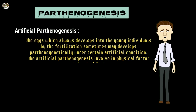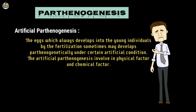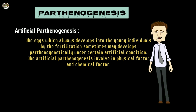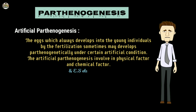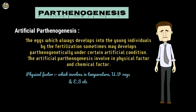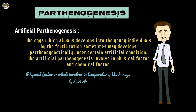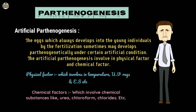Artificial parthenogenesis involves eggs that normally develop through fertilization but can sometimes develop parthenogenetically under certain artificial conditions. Artificial parthenogenesis involves physical factors and chemical factors. Physical factors include temperature, UV rays, and electric shock.